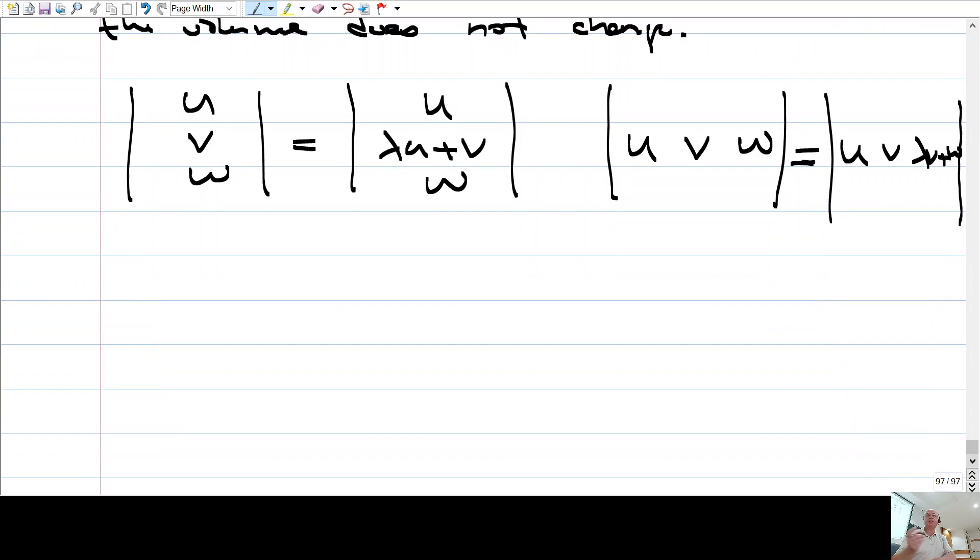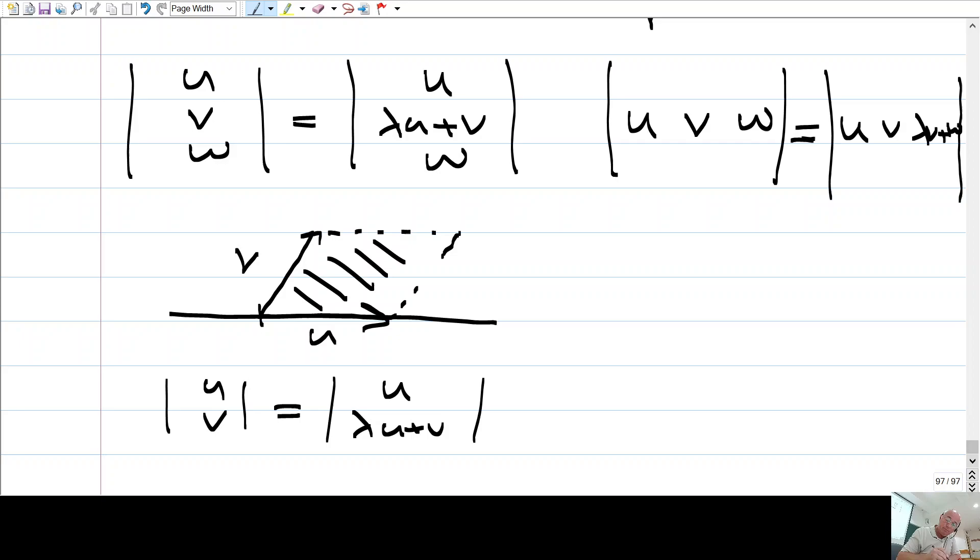Neden değişmiyor? Nedeni çok basit. Yine geometrik düşüneceksiniz. Bakın mesela şu U olsun. Şu da V olsun. U V. Bunun determinantı nedir? U V'nin determinantı. Şu değil mi? Area. Peki U artı diyelim ki ben şunu yaptım. Lambda U artı V dersem ne olacak? U'nun ya da şöyle diyeyim. Evet.